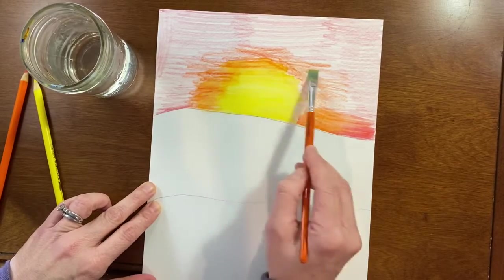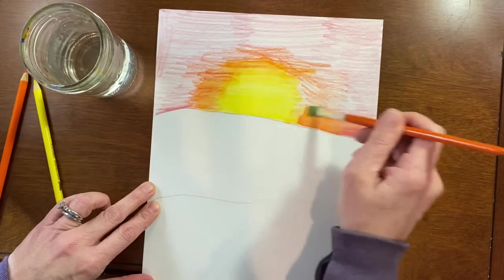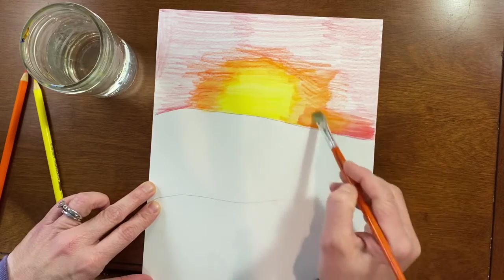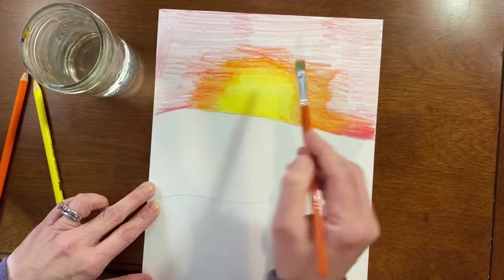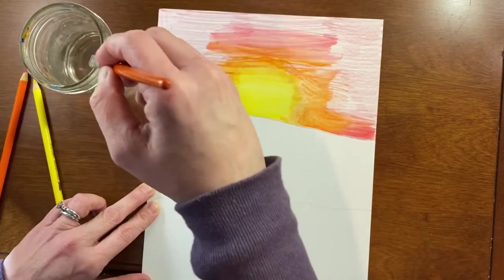I'm gonna get this yellow wet and let it start to blend into the orange so that it blends as typical watercolor would. So that's a little bit of a hard line, so I'm just kind of blending that a little more.